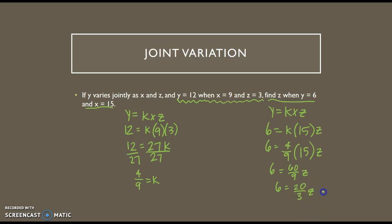And now to get z by itself, I can start by multiplying by 3, getting rid of the denominator. 6 times 3 is 18, so I get 18 equals 20z, and then divide by 20 to get z by itself. So 18 does not divide by 20, but we can simplify it. 2 goes into both of those, so I end up with 9 over 10 for z. And that's okay to have a fraction or a decimal in variation.